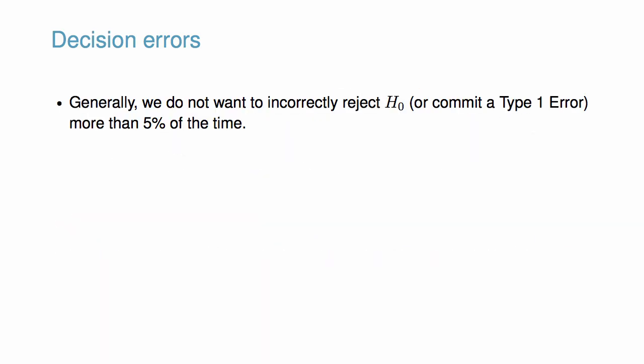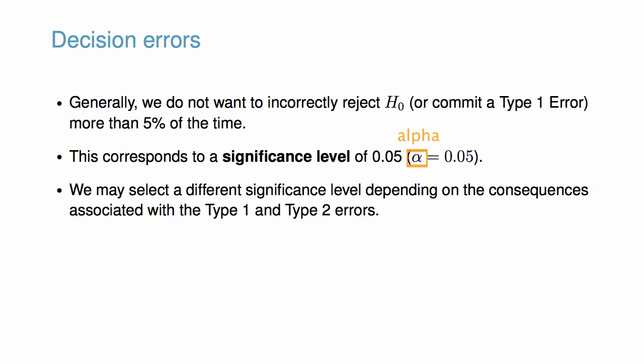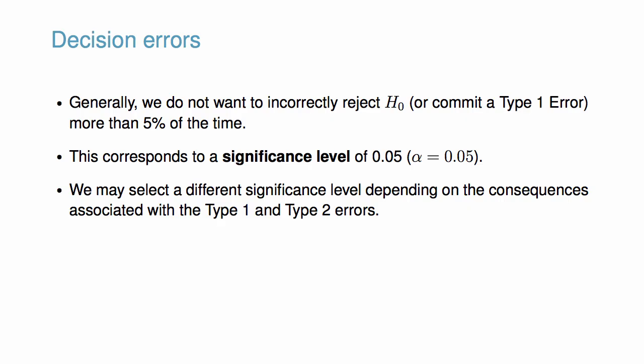Generally, we do not want to incorrectly reject the null hypothesis more than 5% of the time. This corresponds to a significance level of 0.05, denoted by alpha. We may select a different significance level depending on the consequences associated with Type 1 and Type 2 errors. However, reducing our chances of one error increases the chances of the other error.